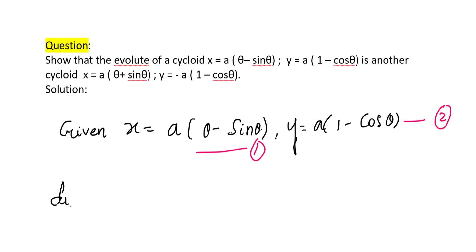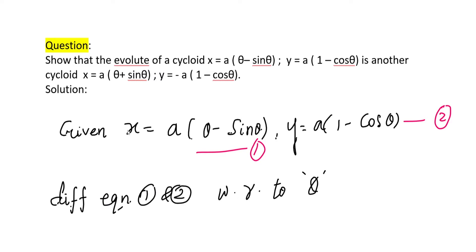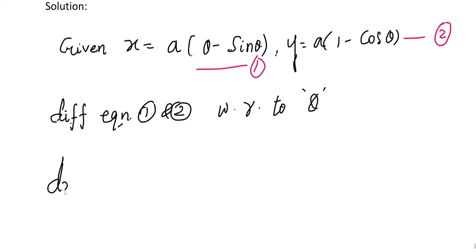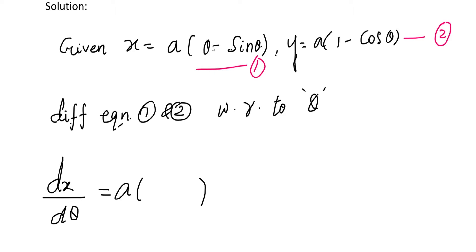Now let's differentiate these two equations with respect to θ. For the first equation, dx/dθ = a(1 − cos θ), since the derivative of θ is 1 and the derivative of sin θ is cos θ.